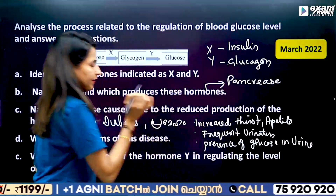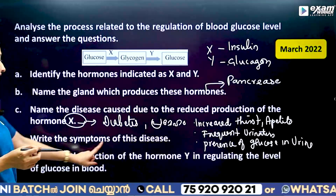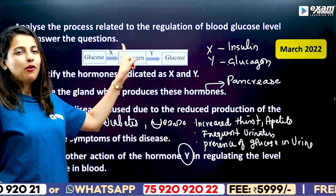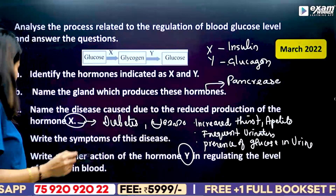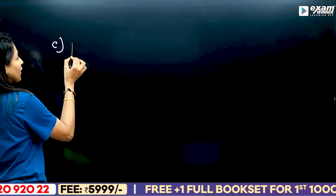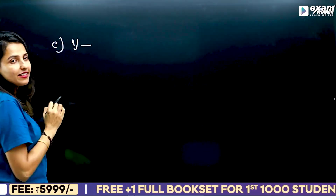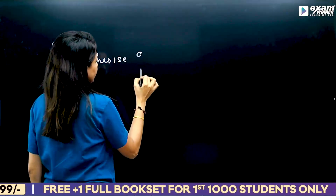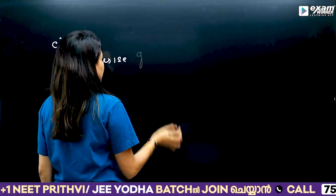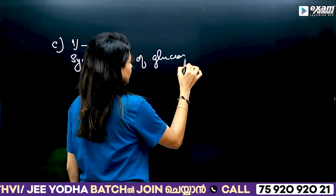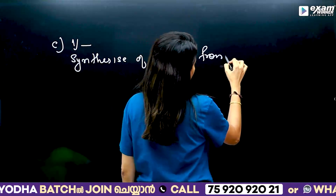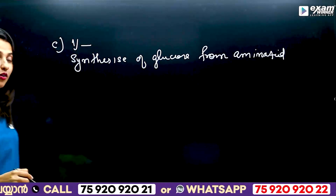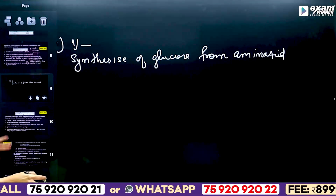Another action of the hormone Glucagon in regulating blood glucose level: one action is converting glycogen to glucose. Another is synthesis of glucose from amino acids.